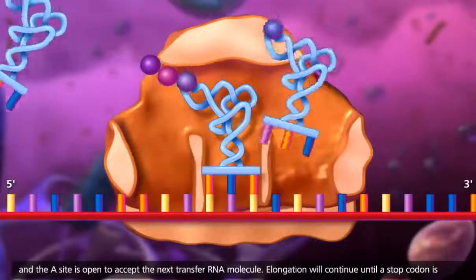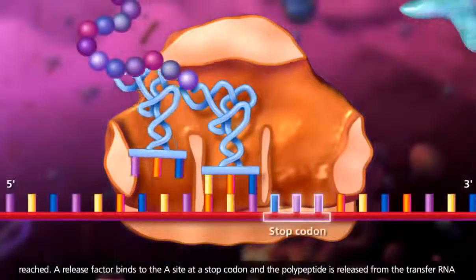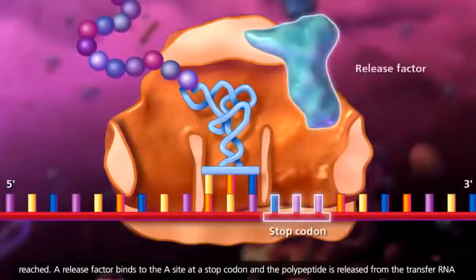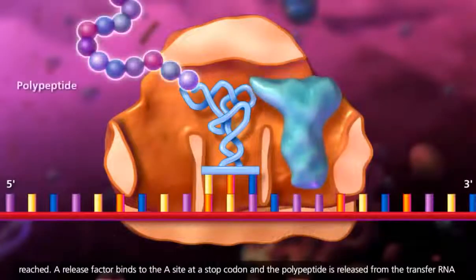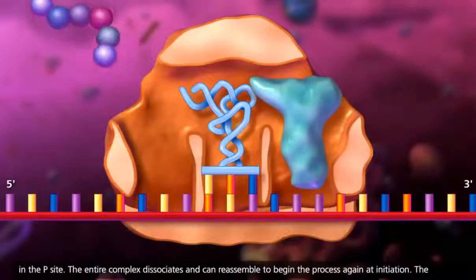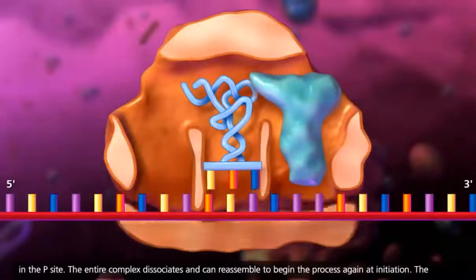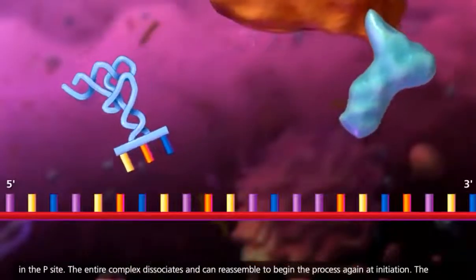Elongation will continue until a stop codon is reached. A release factor binds to the A site at a stop codon, and the polypeptide is released from the transfer RNA in the P site. The entire complex dissociates and can reassemble to begin the process again at initiation.